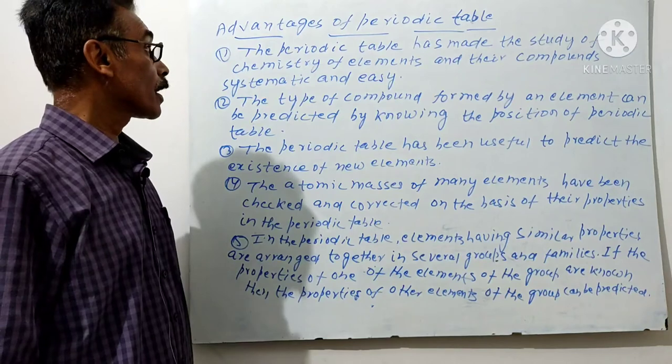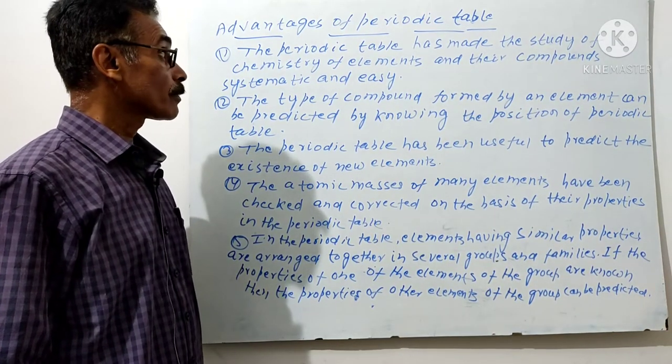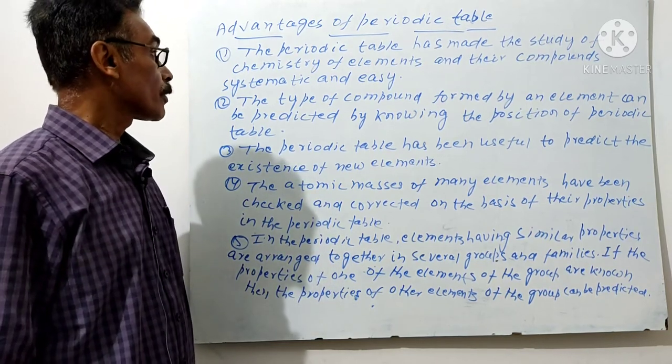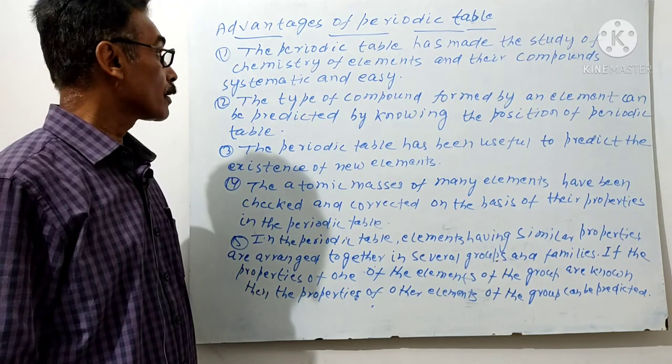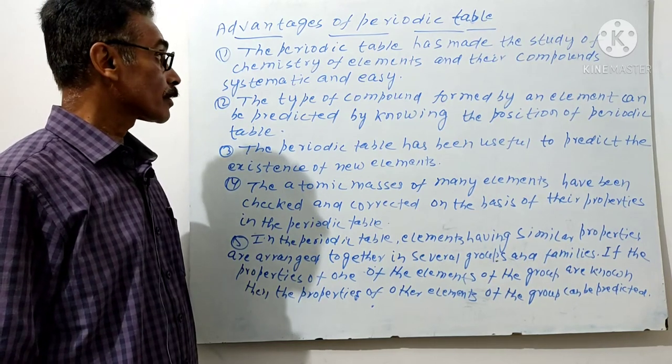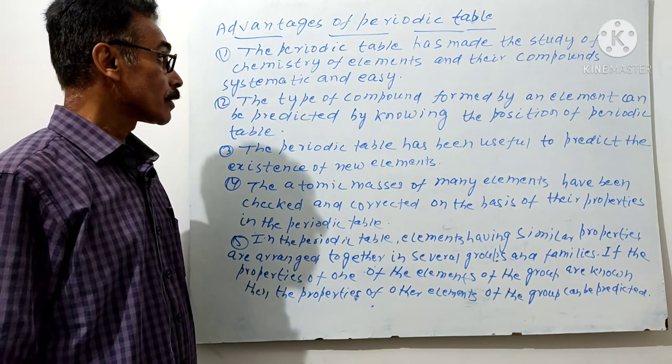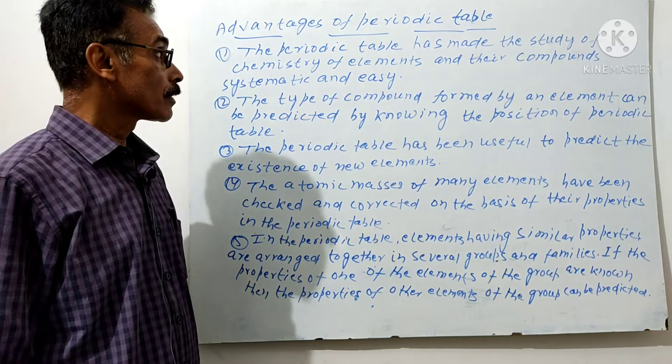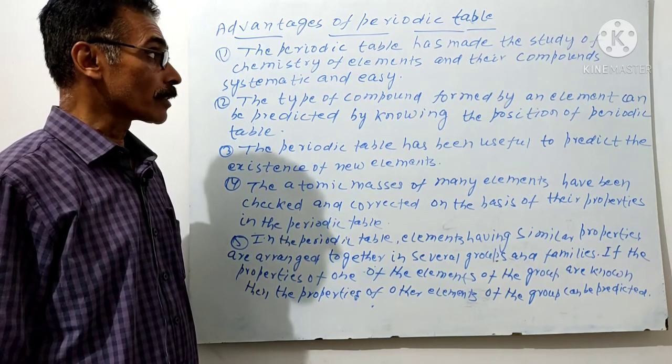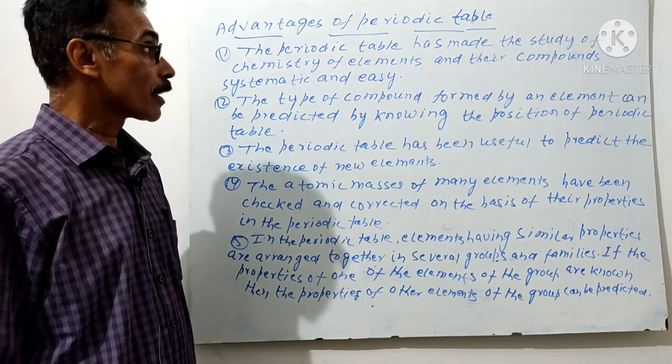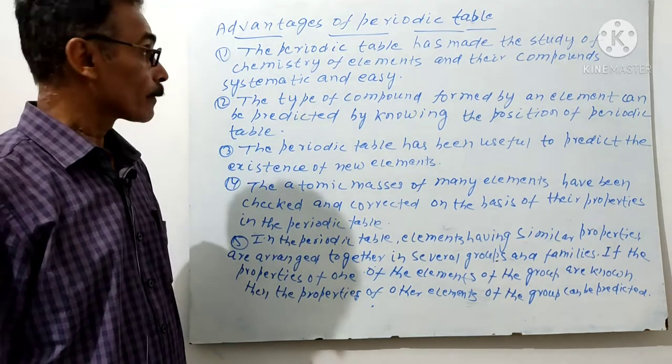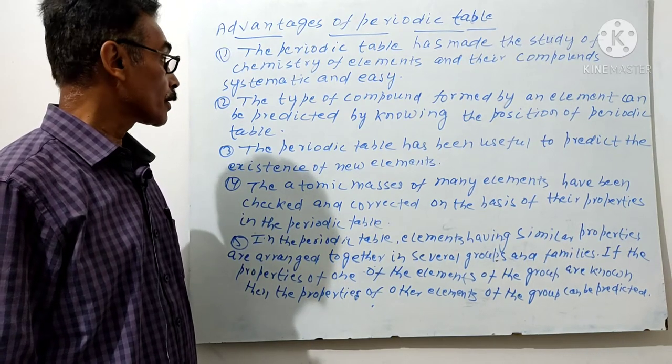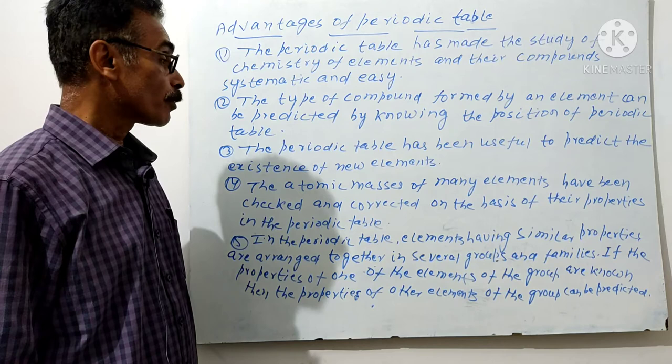Next and last topic is the advantages of the periodic table. Number first: The periodic table has made the study of chemistry of elements and their compounds systematic and easy. The type of compounds formed by an element can be predicted by knowing the position of the periodic table.